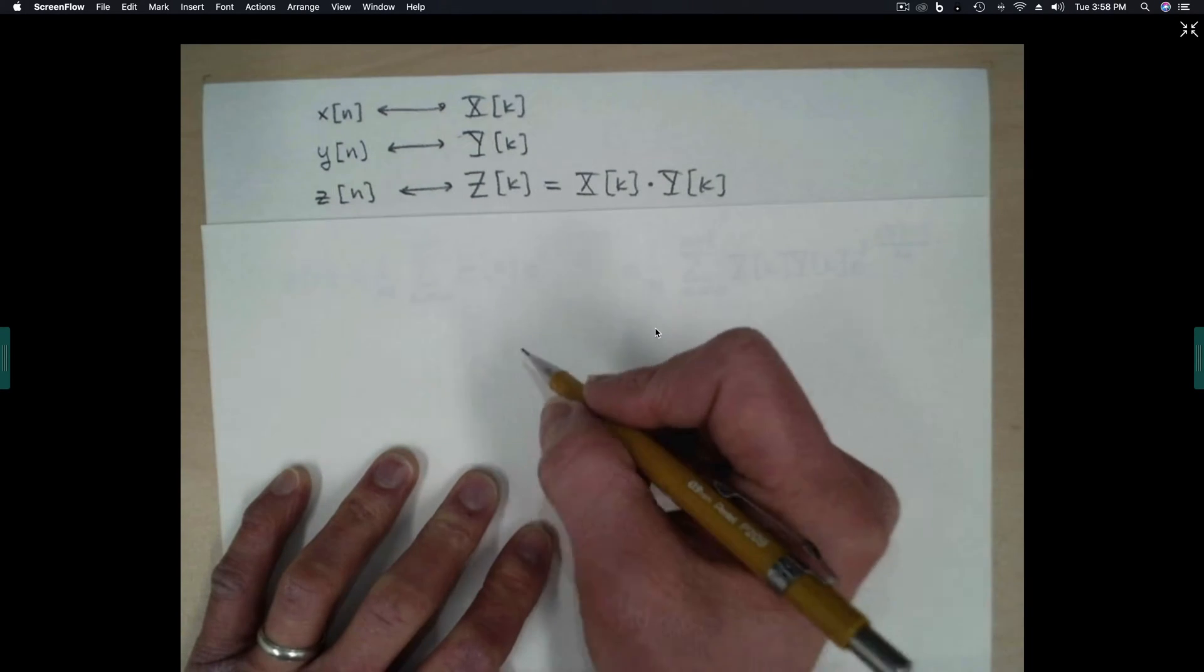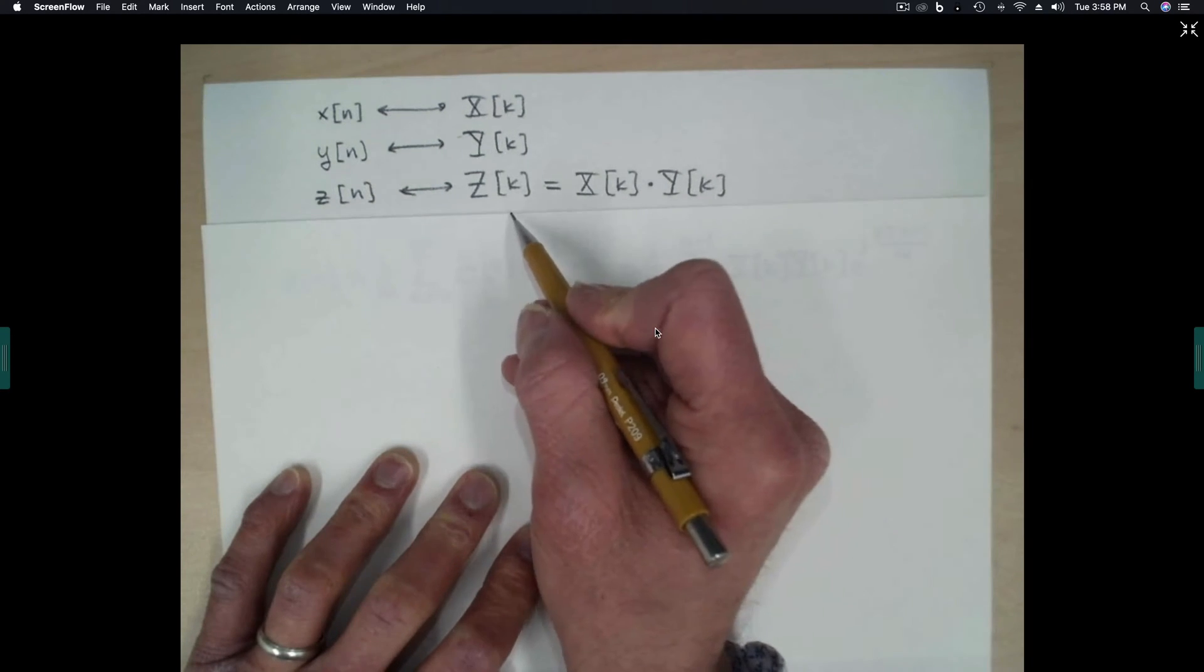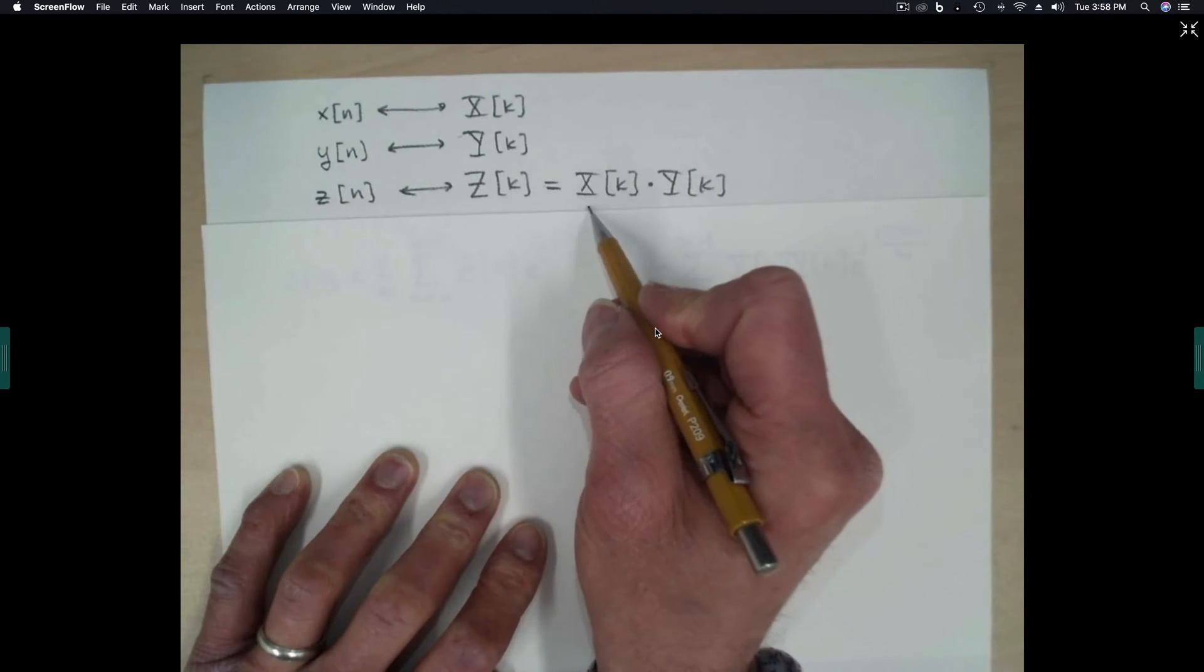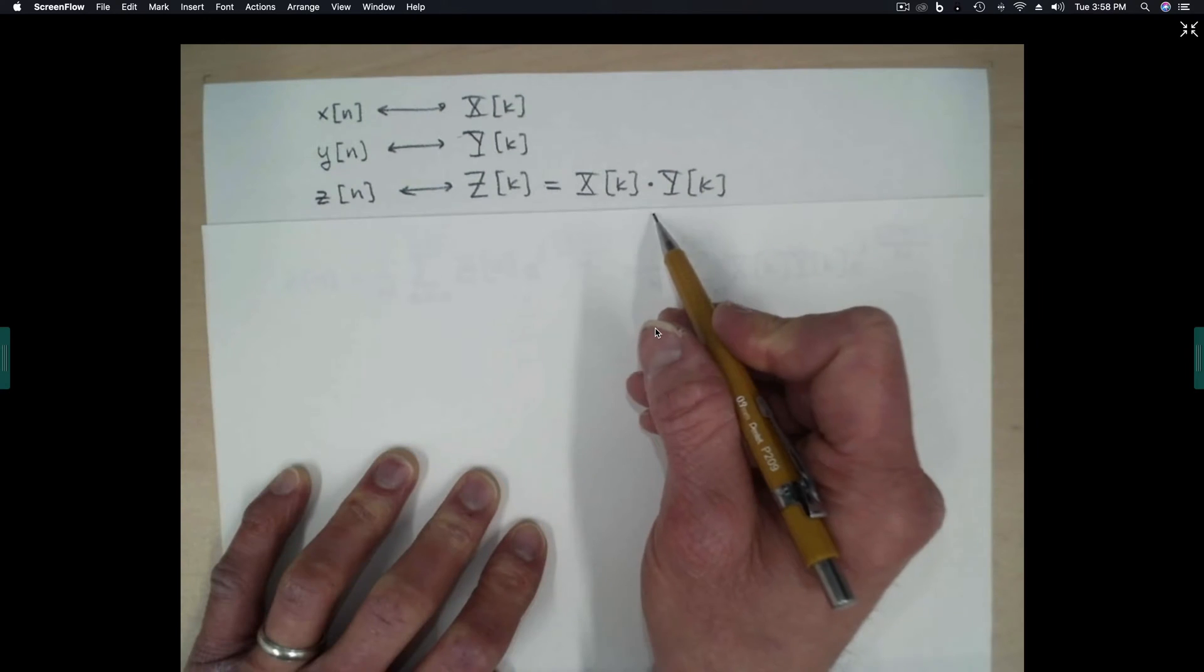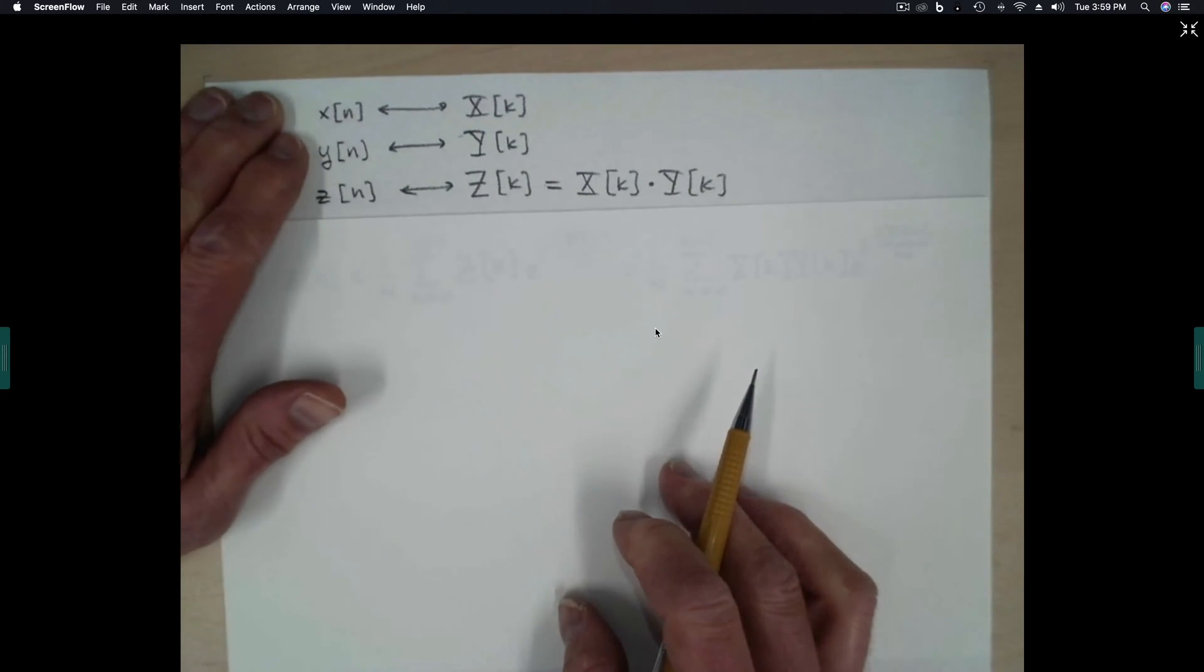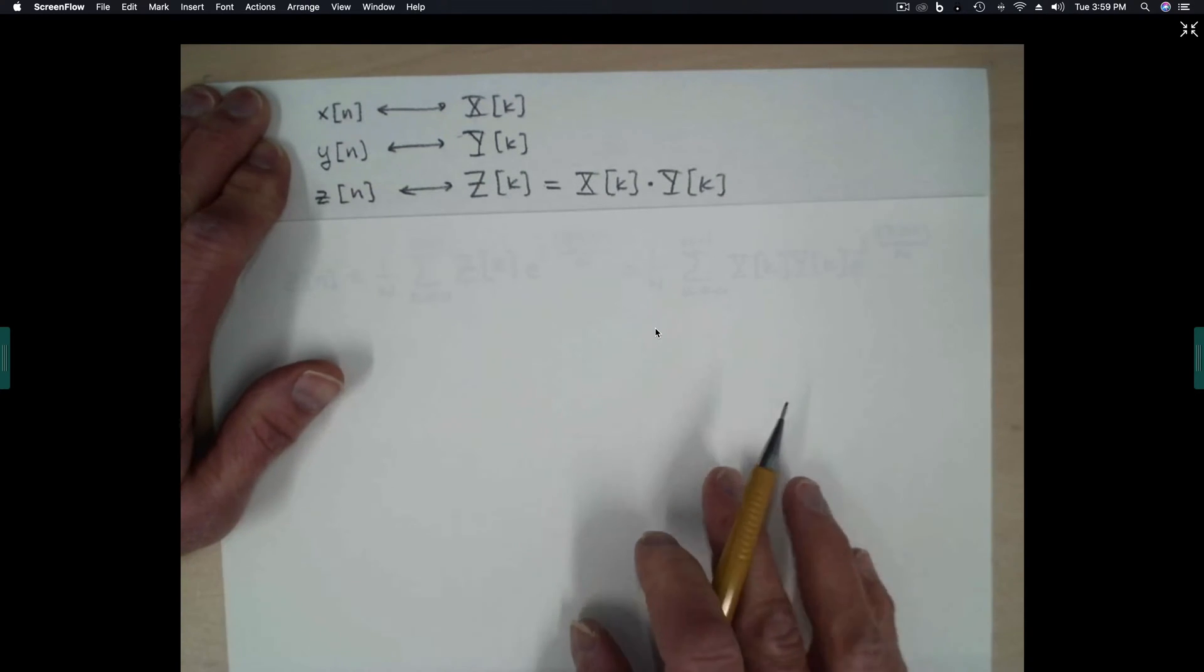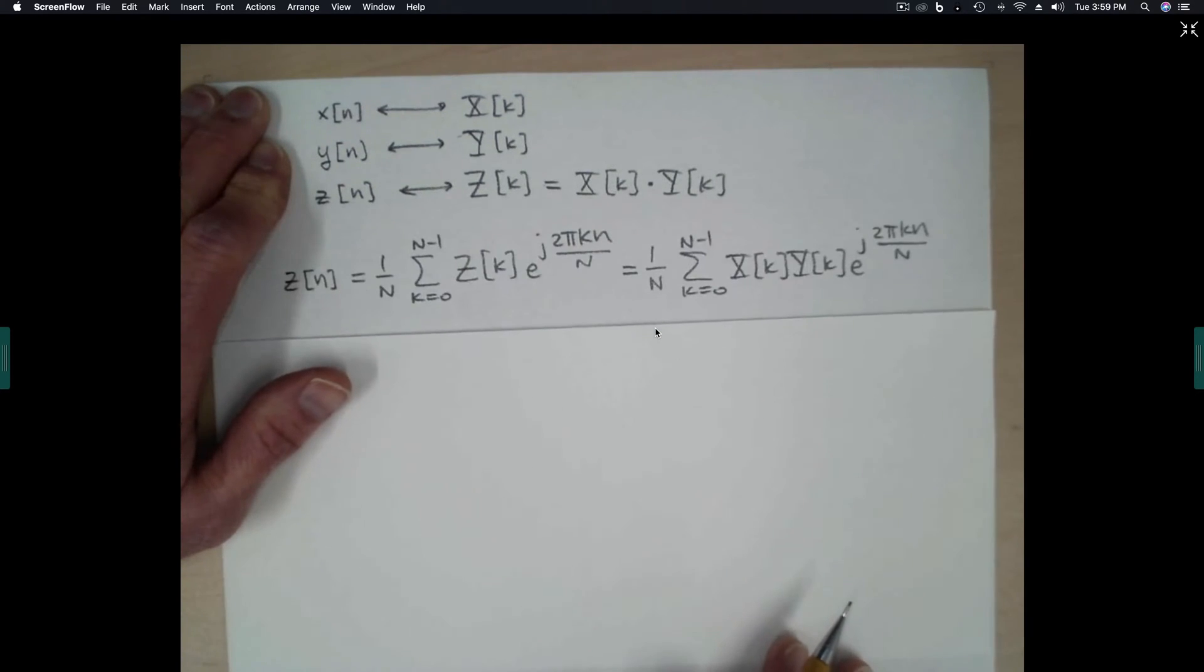And let's see if we can understand what would happen in the time domain if we were to take two transforms and multiply them together in the frequency domain. Normally we would expect the time domain result to be convolution, so let's keep a lookout for things that look like convolution.